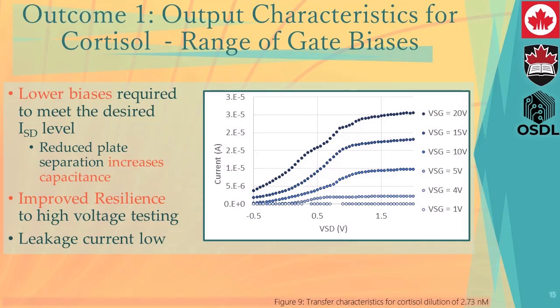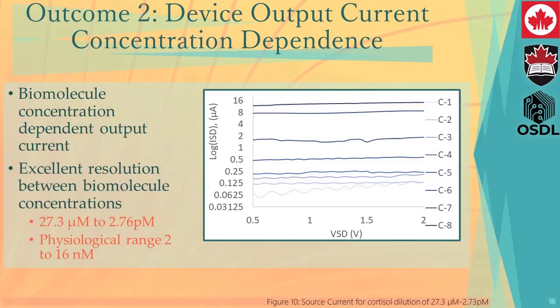Our second outcome clearly demonstrates that output current is dependent on biomolecule concentration. As biomolecule concentration increases from C1 at 2.76 picomolar to C8 at 27.3 micromolar, we see a dramatic decrease in the output current, with excellent resolution between biomolecule concentrations. This encompasses the physiological range of cortisol in saliva, which is 2 to 16 nanomolar.